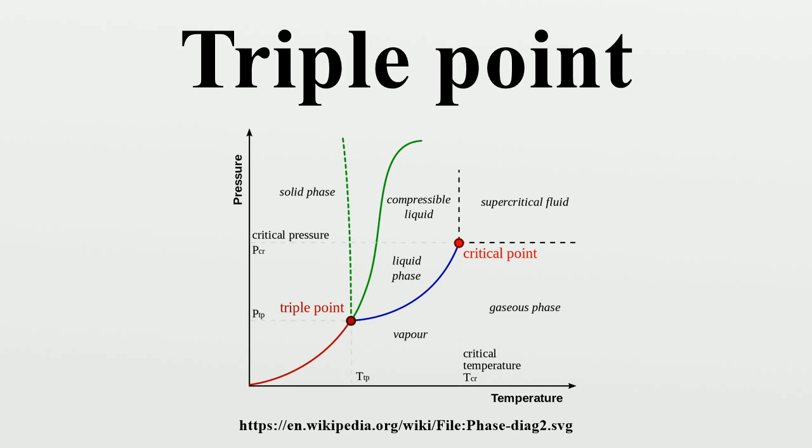The triple point of water is used to define the Kelvin, the base unit of thermodynamic temperature in the international system of units. The value of the triple point of water is fixed by definition, rather than measured. The triple points of several substances are used to define points in the ITS-90 International Temperature Scale, ranging from the triple point of hydrogen to the triple point of water.